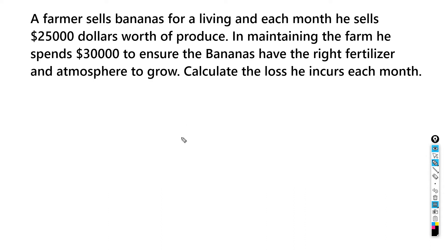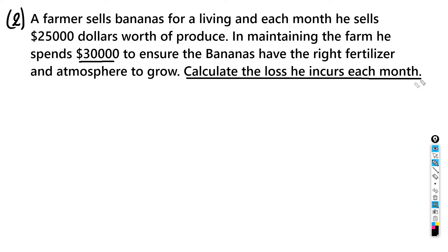The second loss example: a farmer sells bananas for a living. Each month he sells $25,000 worth of produce, but maintaining the farm costs him $30,000 a month to ensure the bananas have the right fertilizer and atmosphere to grow. Calculate the loss he incurs each month. This is a really common situation — many farmers, especially in Jamaica, don't realize how much they're actually earning.